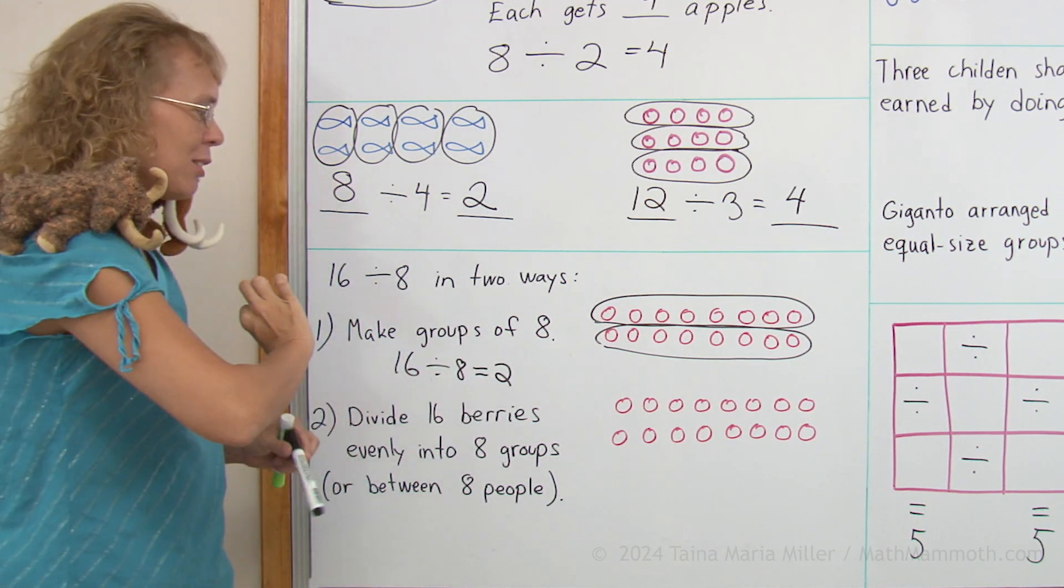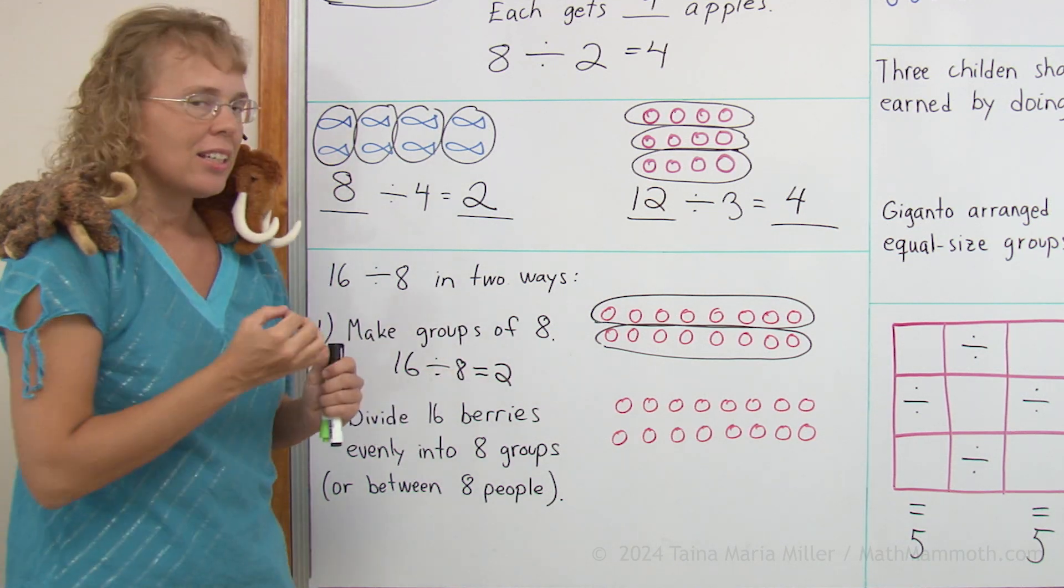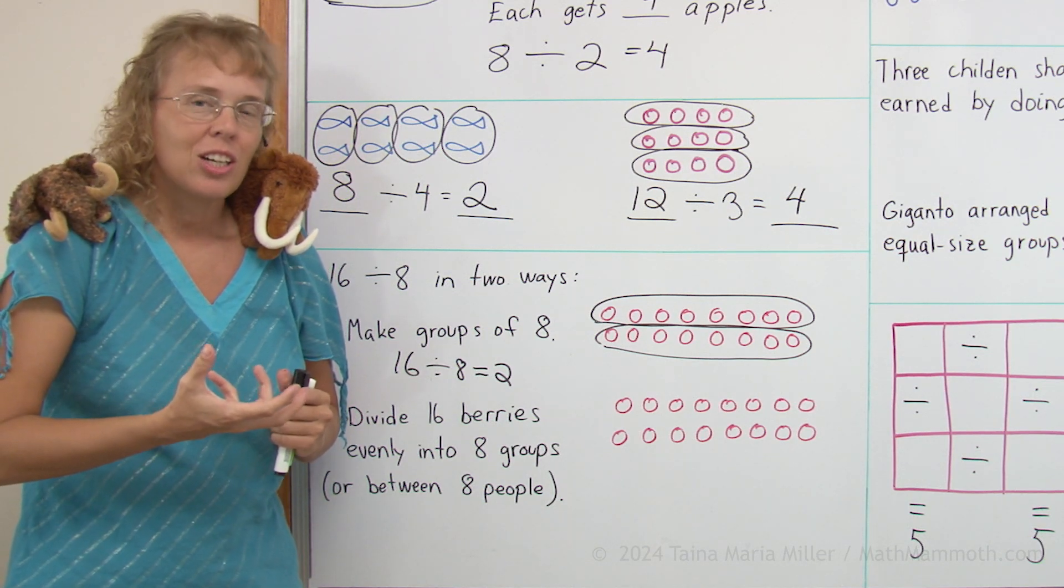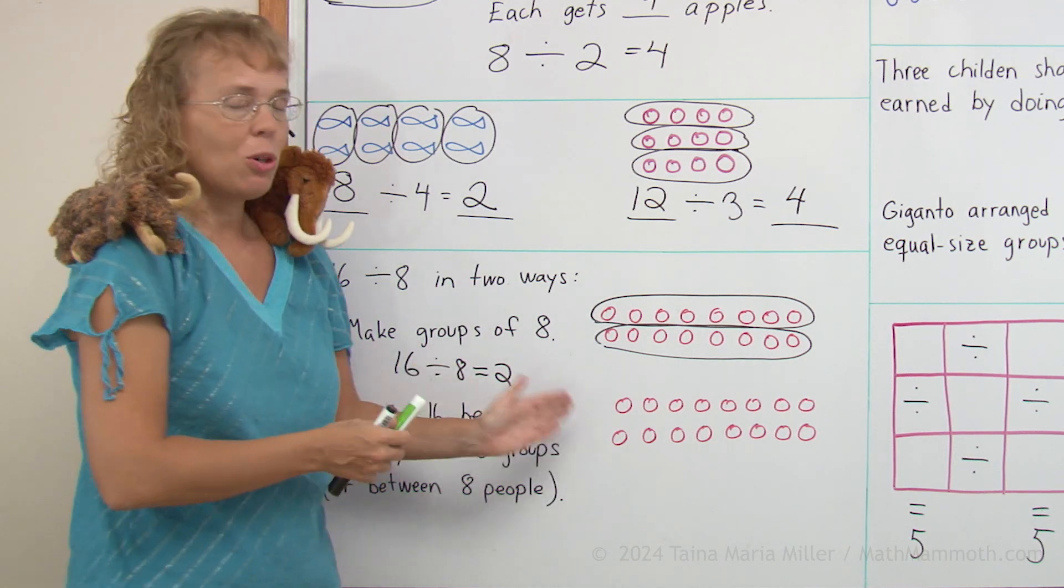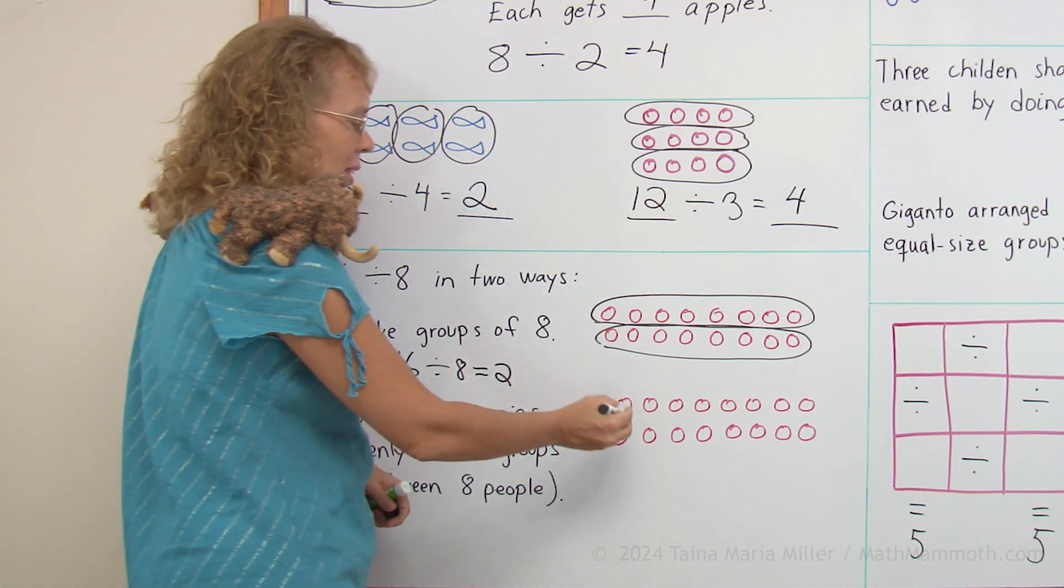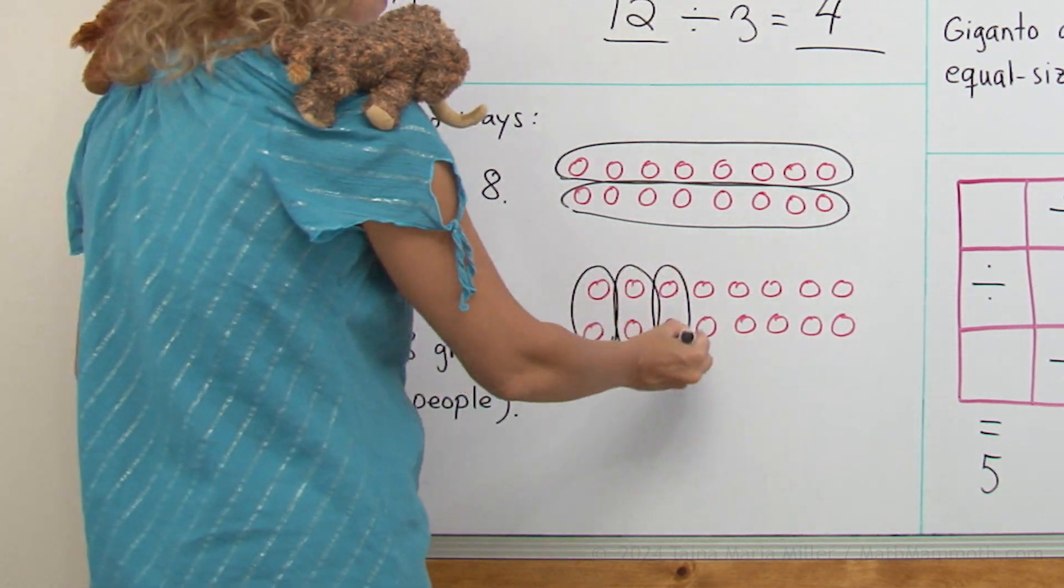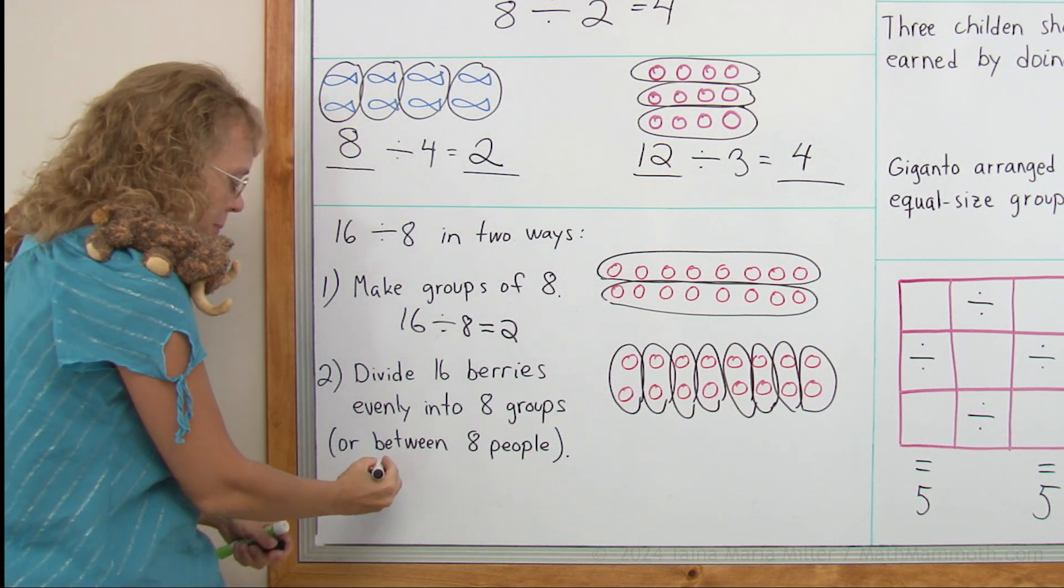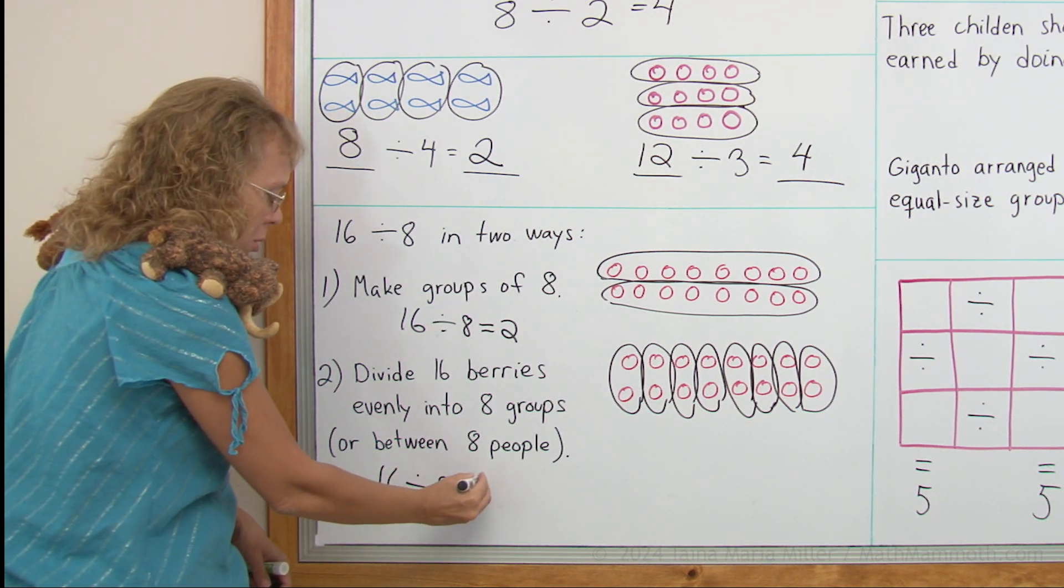And the other way to think about it is with equal sharing. You have 16 berries and you're going to share them between 8 people. Or you're going to make 8 groups. And then you don't know how many go in each group initially. That's what you're solving. And I know it's going to be 2 so I can make my groups like that. This division is also 16 divided by 8 equals 2.